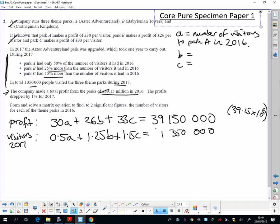We're going to need at least one more equation because I've got three unknowns. They've also told us about the profits for 2017. So this was profit 2016, now we're going to do profit 2017.